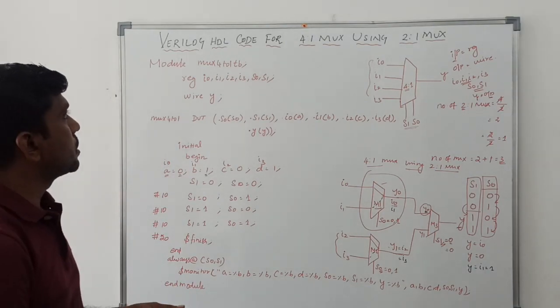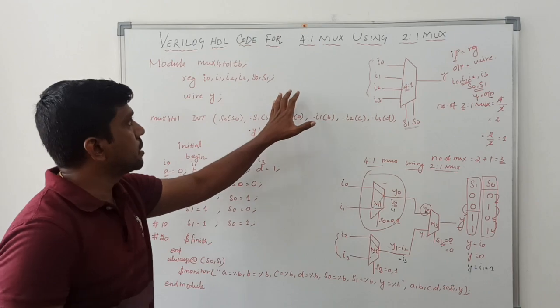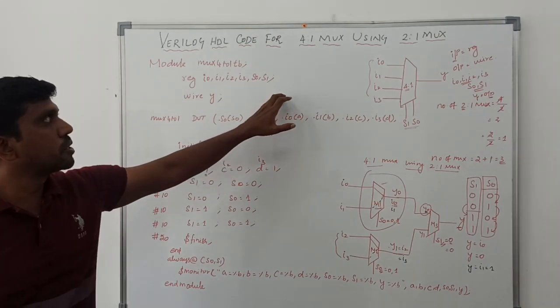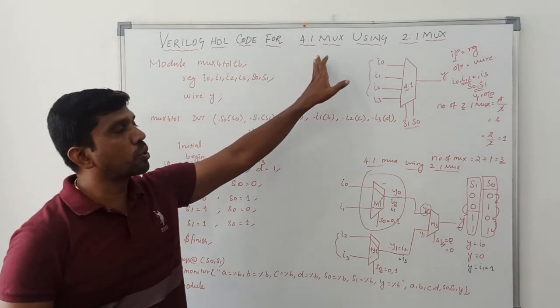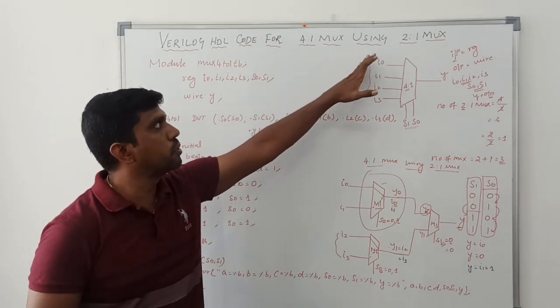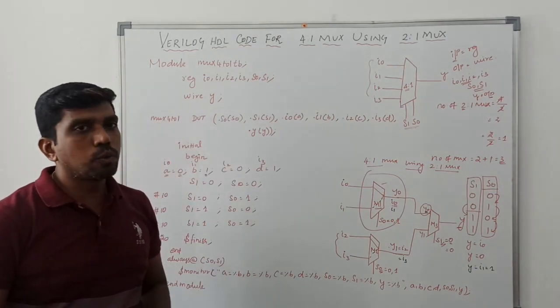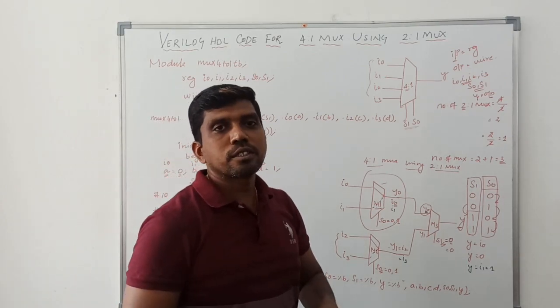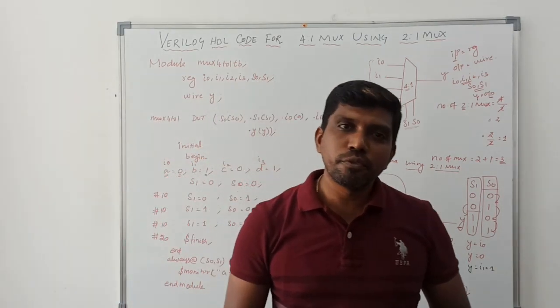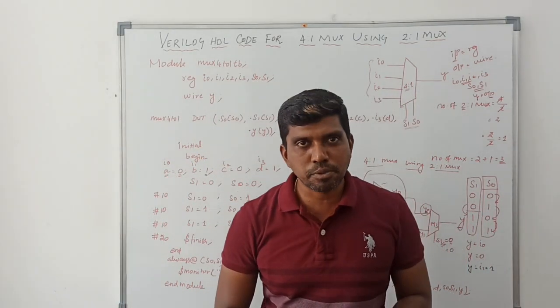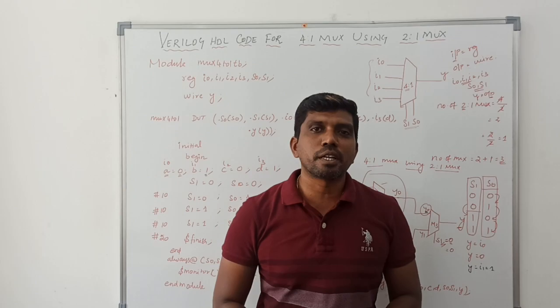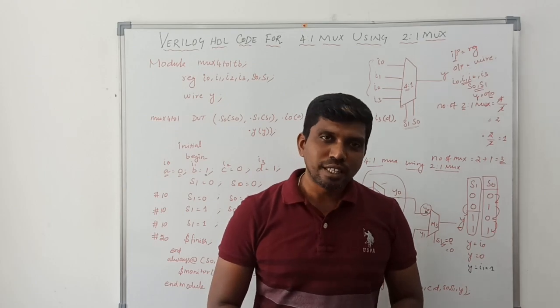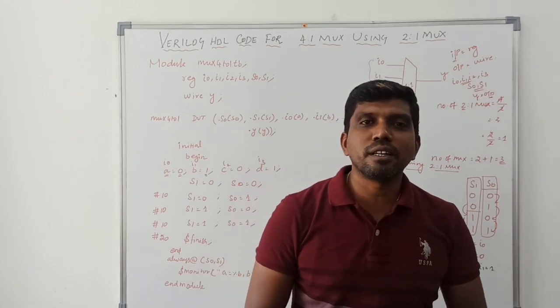This is the simple way to write the testbench Verilog HDL code for a 4-to-1 mux by using a 2-to-1 mux. I hope you understand the concept very well. If you are watching my video for the first time, kindly subscribe and support us to make more videos. Thanks for watching.